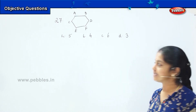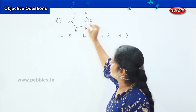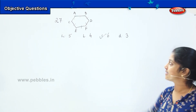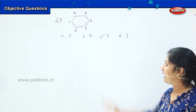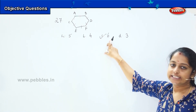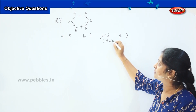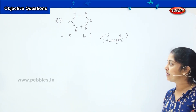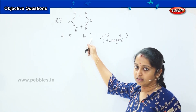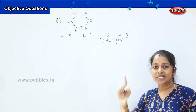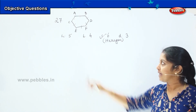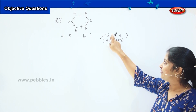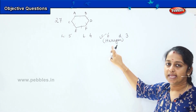Shall we count the number of sides? It's 1, 2, 3, 4, 5, 6. So your correct answer is option C which is 6. And a figure which has got 6 sides is called a hexagon. So if you remember, a figure having 4 sides is a quadrilateral, a figure having 5 sides is called a pentagon, and a figure with 6 sides is called a hexagon.